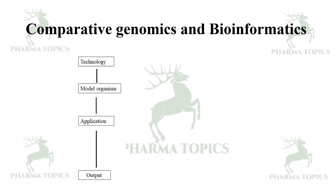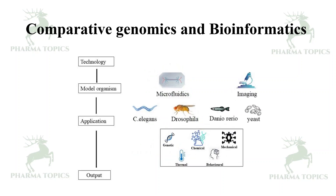Using bioinformatics technology, a model organism is applied and outputs are obtained. Data can come from microfluidics, C. elegans, Drosophila, Danio rerio (zebrafish), and yeast — all providing large amounts of genetic, chemical, behavioral, mechanical interaction, and imaging data.